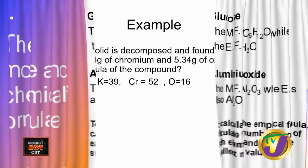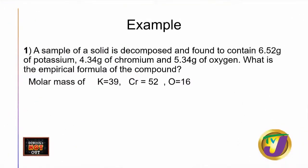Here's a question to apply what we've learned. A sample of a solid is decomposed — decomposed means broken down — and found to contain 6.52 grams of potassium, 4.34 grams of chromium, and 5.34 grams of oxygen. What is the empirical formula of the compound? The molar masses of the three elements are also provided. Let's go to the board.